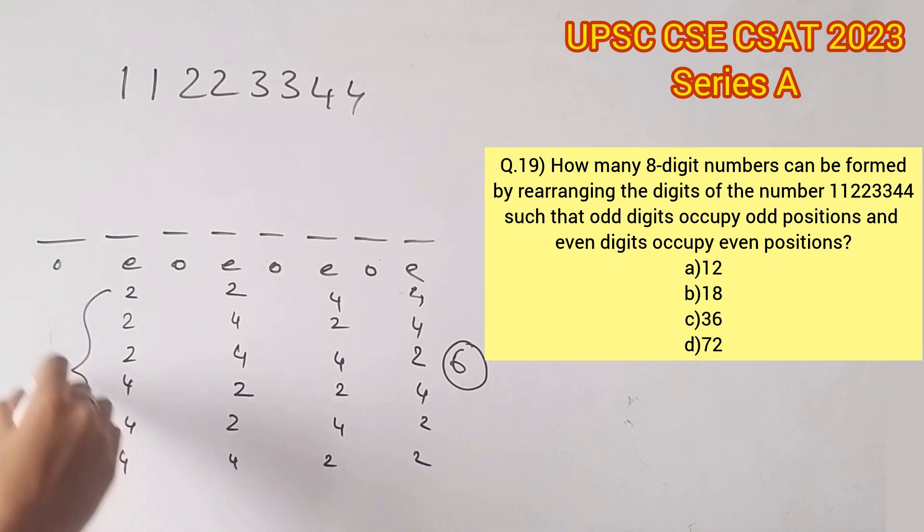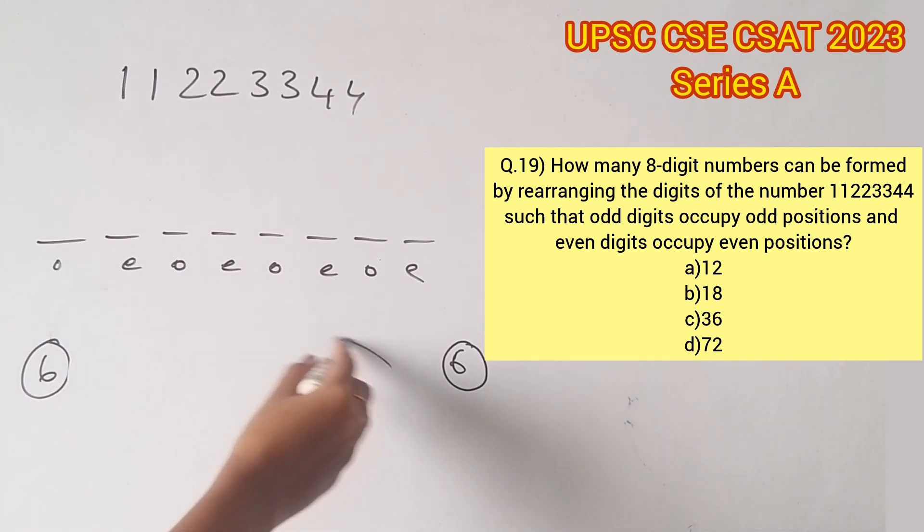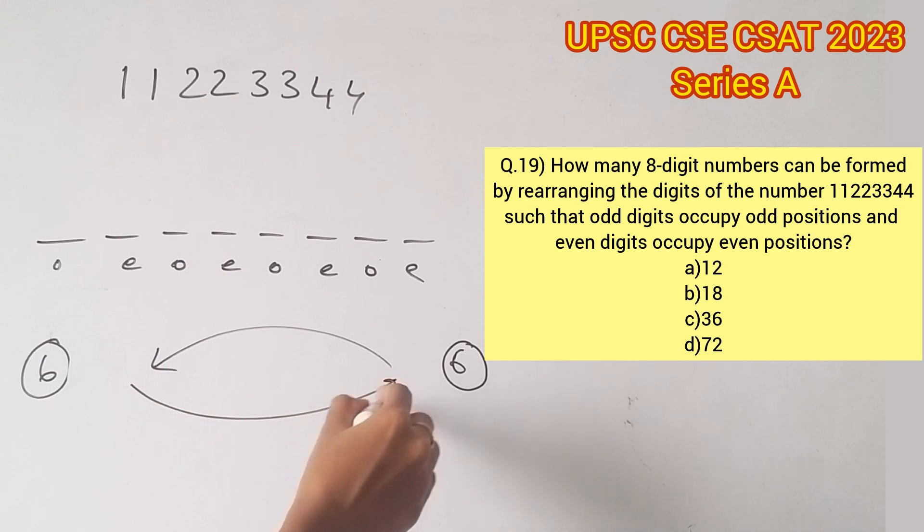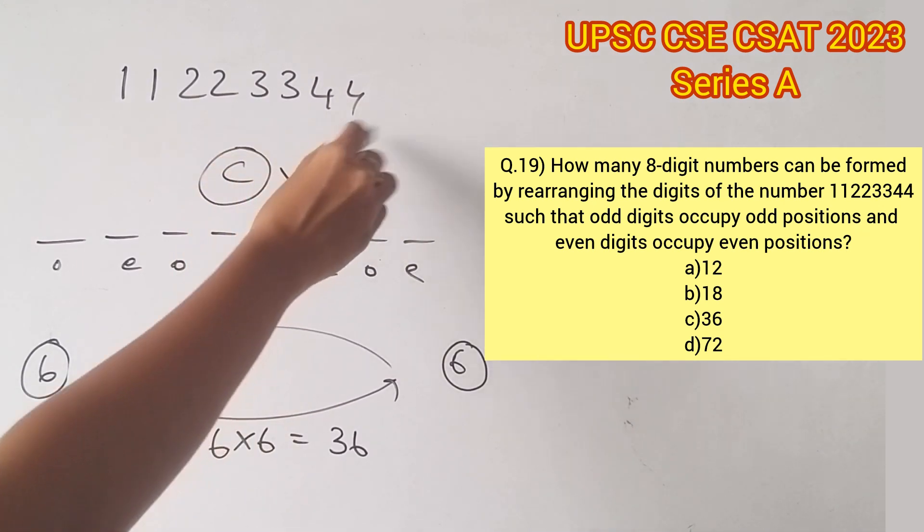the even different places in six different ways. Now to find the total number of combinations possible, we'll have to multiply both the possibilities, that is 6 into 6, which gives us 36. Therefore, option C is the right answer.